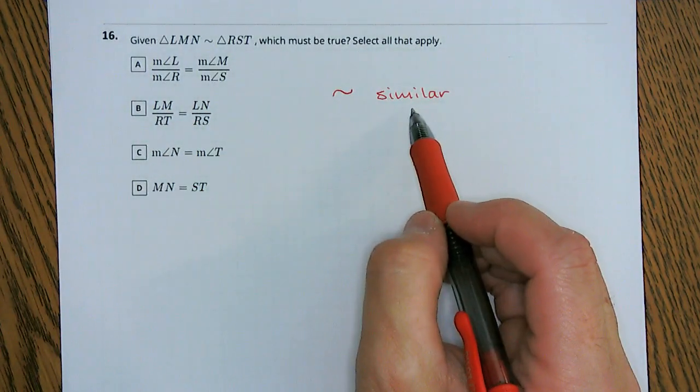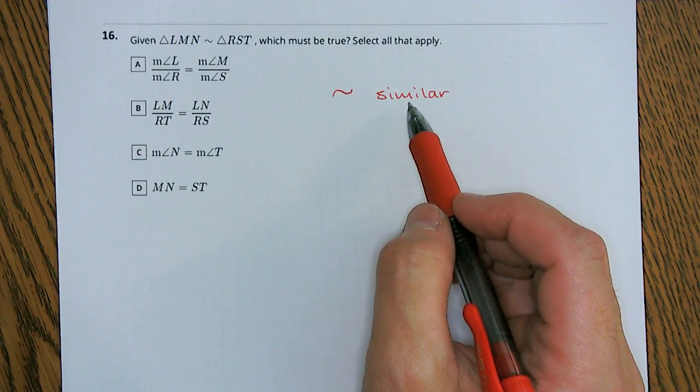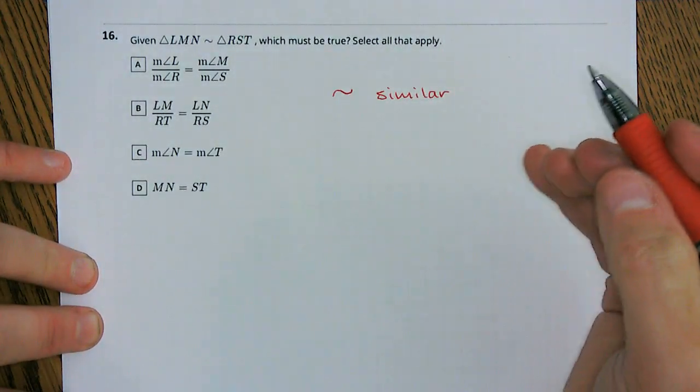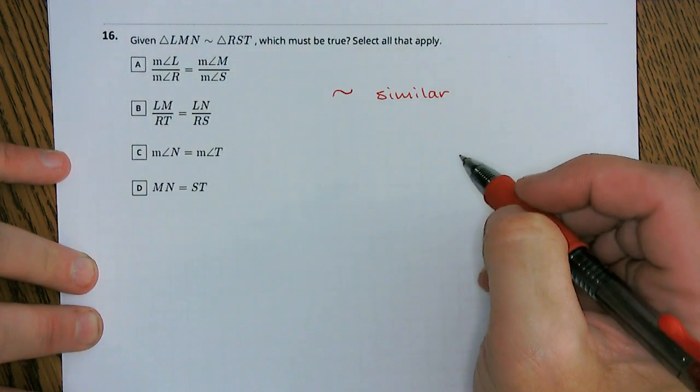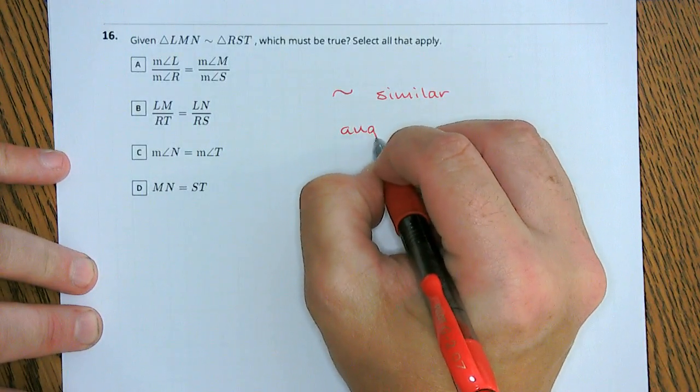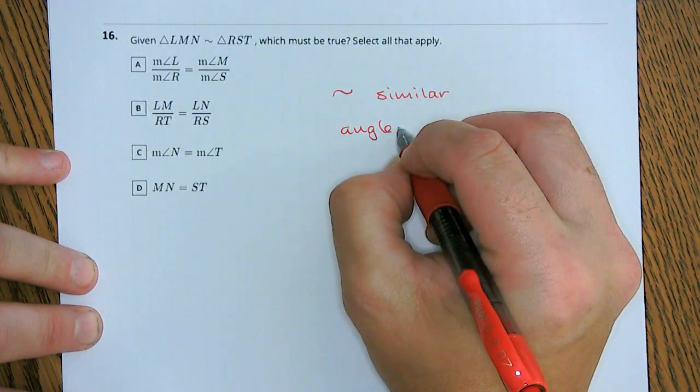Now when we're talking about similarity, we can think about our dilations. Dilations, the shape changed sides, but it did not change shape. So we knew that our angles were congruent, the angles stay congruent.